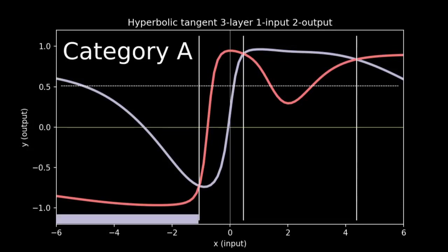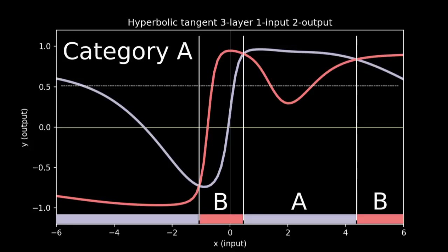This chops up the input space into regions. In each region, one output is greater than the other. For instance, wherever the blue line is greater, we can assign that to be category A. Then wherever the peach colored line is greater, those regions are category B. Just like the multilayer perceptron, this lets us chop the space up in more complex ways than a linear classifier could. Regions of category A and category B can be shuffled together arbitrarily.